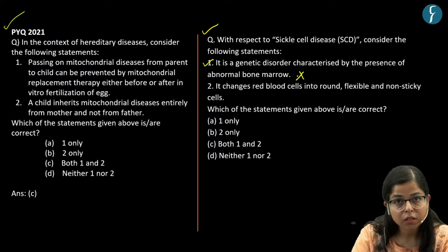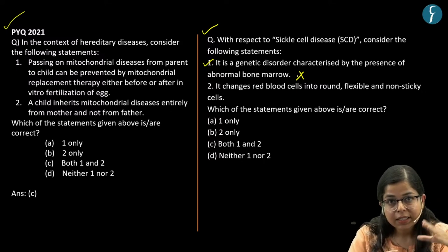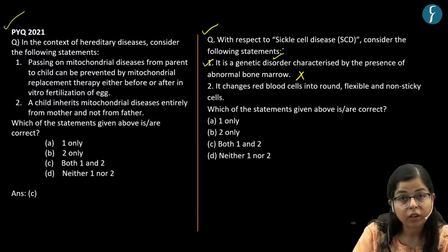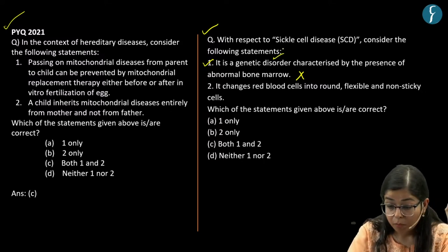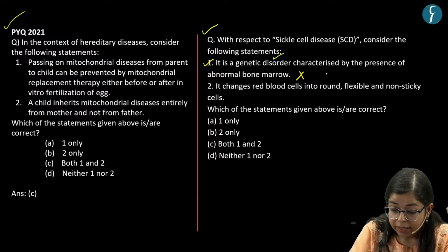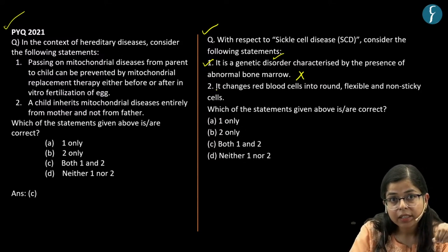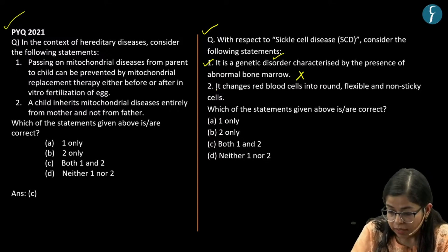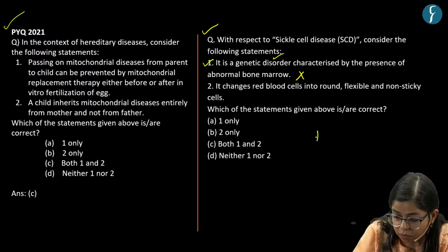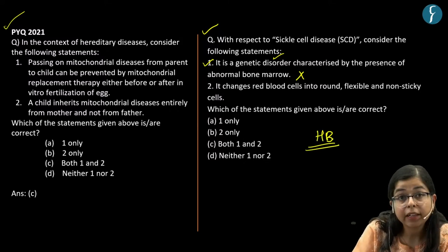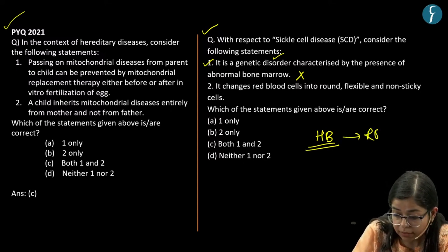Sickle cell anemia is a genetic disorder, but it is characterized by the presence of abnormal hemoglobin. This genetic disorder is characterized by the presence of abnormal hemoglobin, and hemoglobin is a protein which is found in red blood cells.